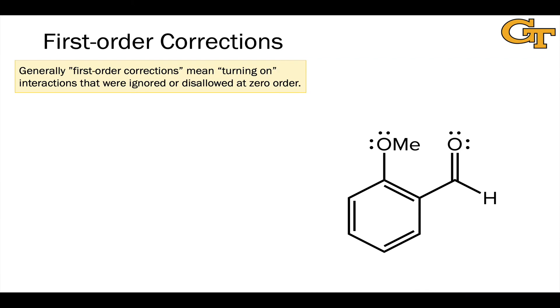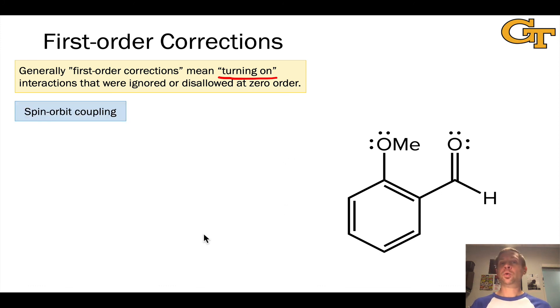How do we go from zero order to first order in a chemical context? We do this by applying first order corrections or mathematically adding in a first order term. Generally this means turning on some kind of interaction that was disallowed or forbidden or ignored at zero order. I'll give you a few examples—spin orbit coupling, the idea that the orbital motion of an electron is related to its spin and the two can interact.